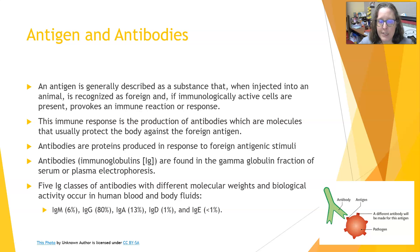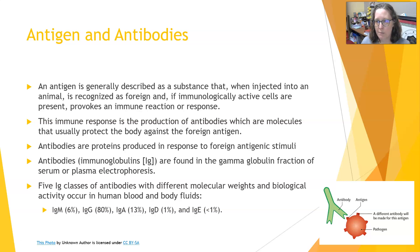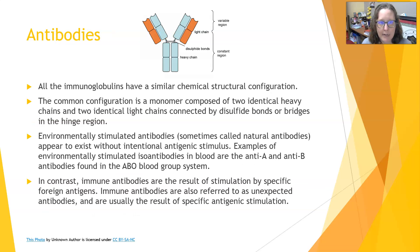IgD is found on the surface of lymphocytes and is only about 1% of immunoglobulins in the blood. IgE is usually less than 1% and is an immunoglobulin produced during allergic reactions. So if you are allergic to peanuts or bee stings, the antibody produced will be an IgE class antibody — against bee sting venom or peanut proteins.